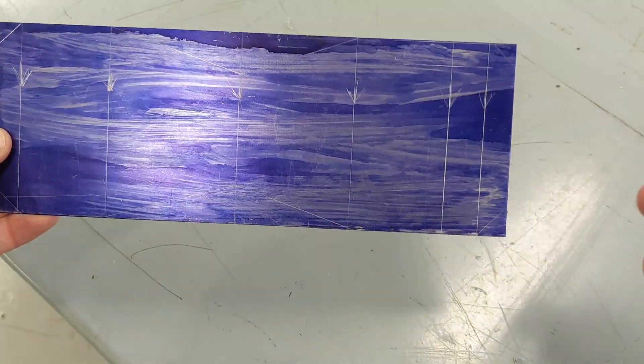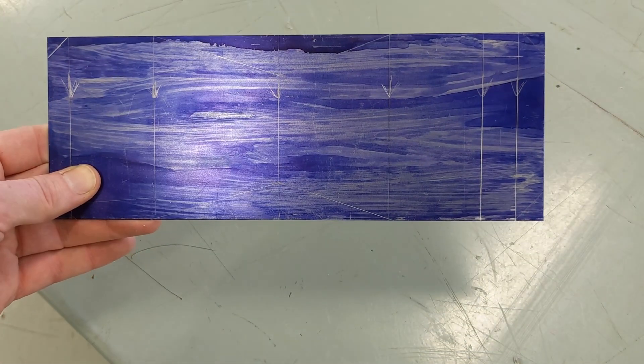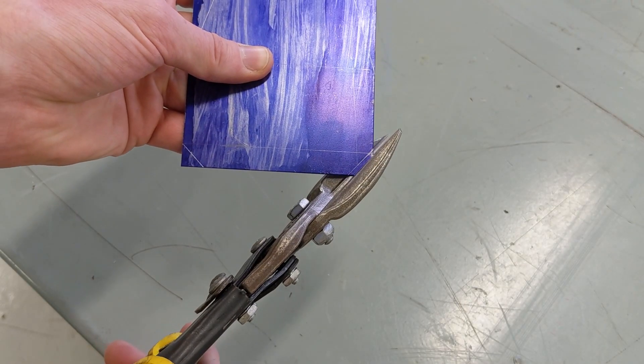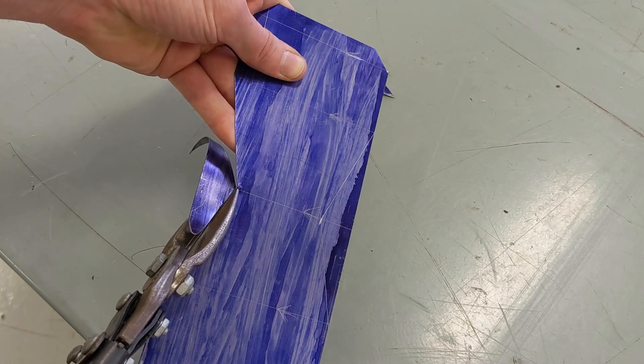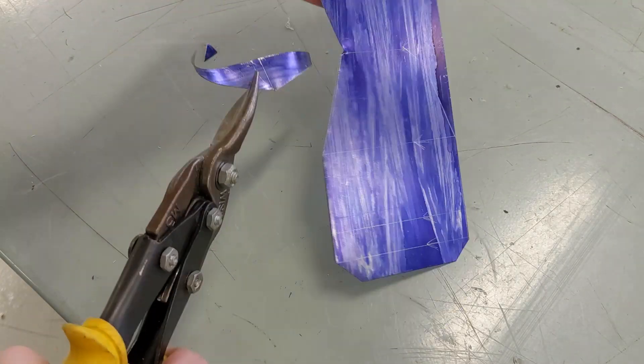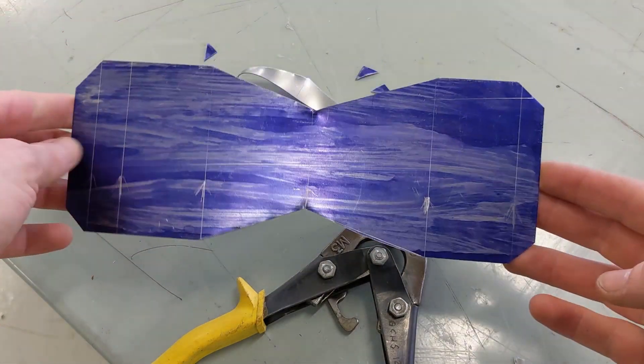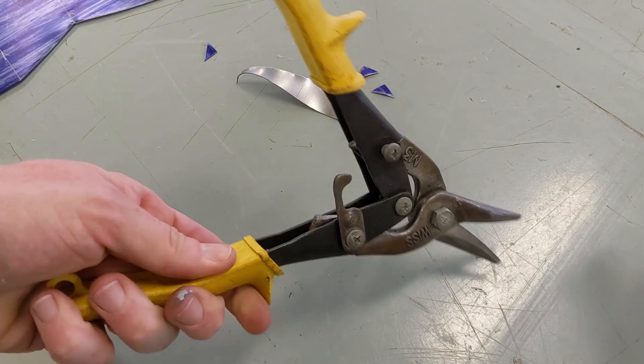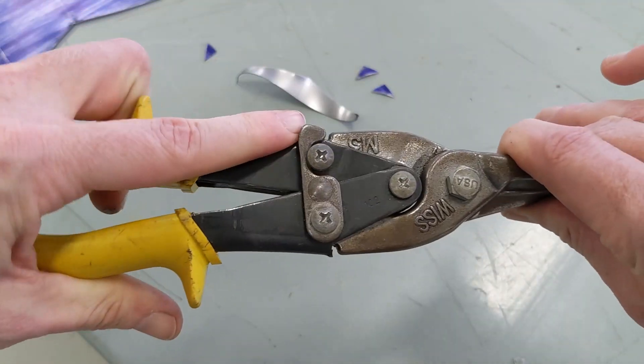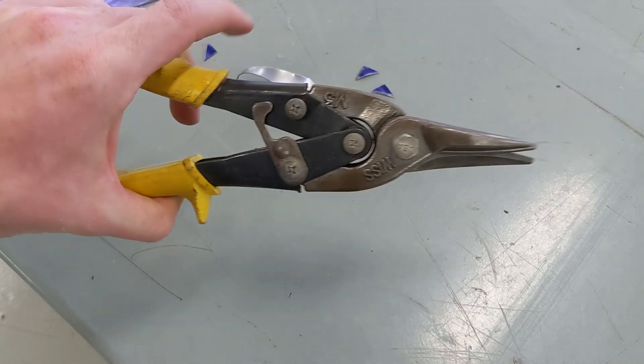Once you have all those, you're basically just cutting your angles and cutting our triangle out in the middle to give us our angle in the center. There you go, cut to shape. We just use a simple set of straight cut aviation shears or compound shears to make that happen. Any set of tin snips or shears should work.